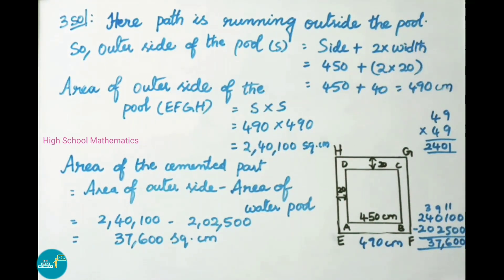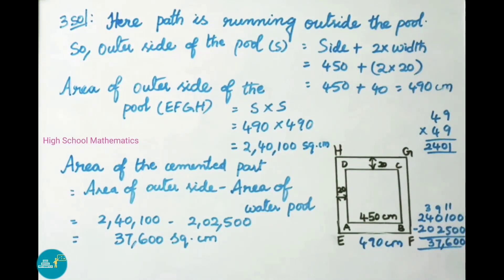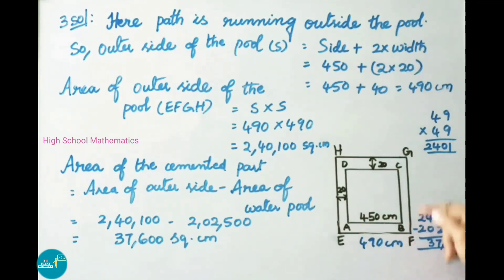We do the subtraction: 2,40,100 minus 2,02,500. Working through the digits with borrowing: 11 minus 5 is 6, 9 minus 2 is 7, 3 minus 0 is 3, 0 minus 0 is 0, 0 minus 0 is 0. Therefore the area of the cemented part of the pool is 37,600 square centimeter.